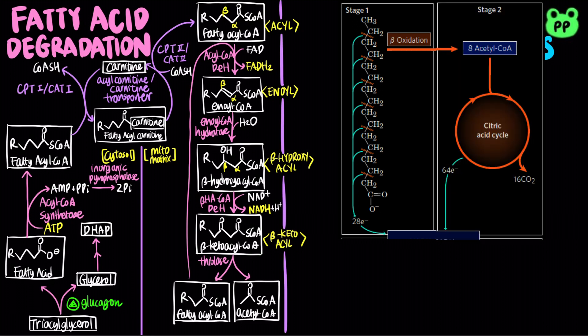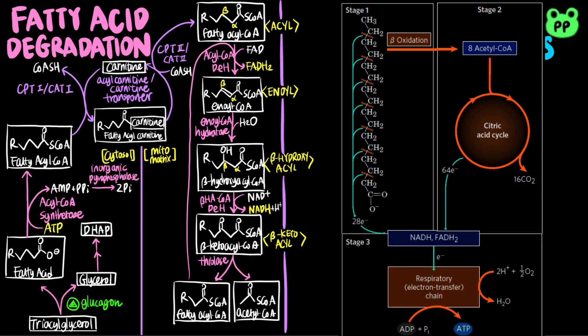The acetyl-CoA is then catabolized in the citric acid cycle, producing carbon dioxide. The NADH and FADH2 produced from beta-oxidation and the citric acid cycle enter the respiratory chain, driving ATP synthesis through oxidative phosphorylation.